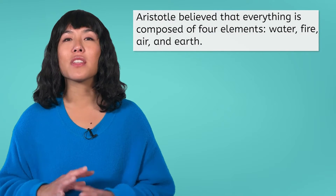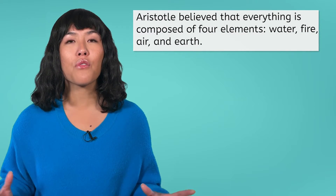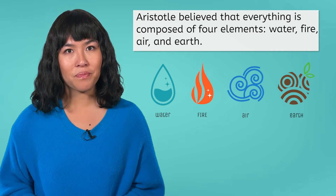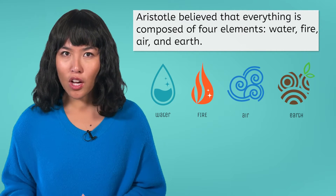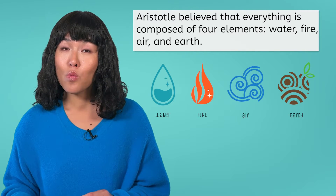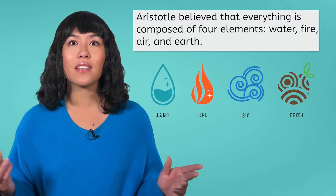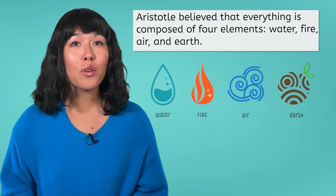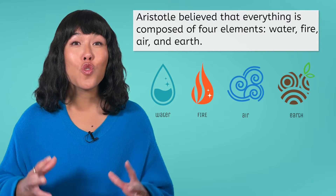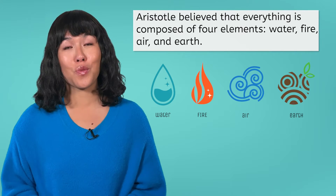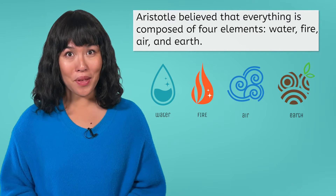Unfortunately for Democritus, Aristotle believed that everything is composed of four elements: water, fire, air, and earth. Since Aristotle was more influential at that time, his theory was the one more widely accepted. But today we know that Democritus was the one who was on the right track. Sounds like our situation in the opening, right?